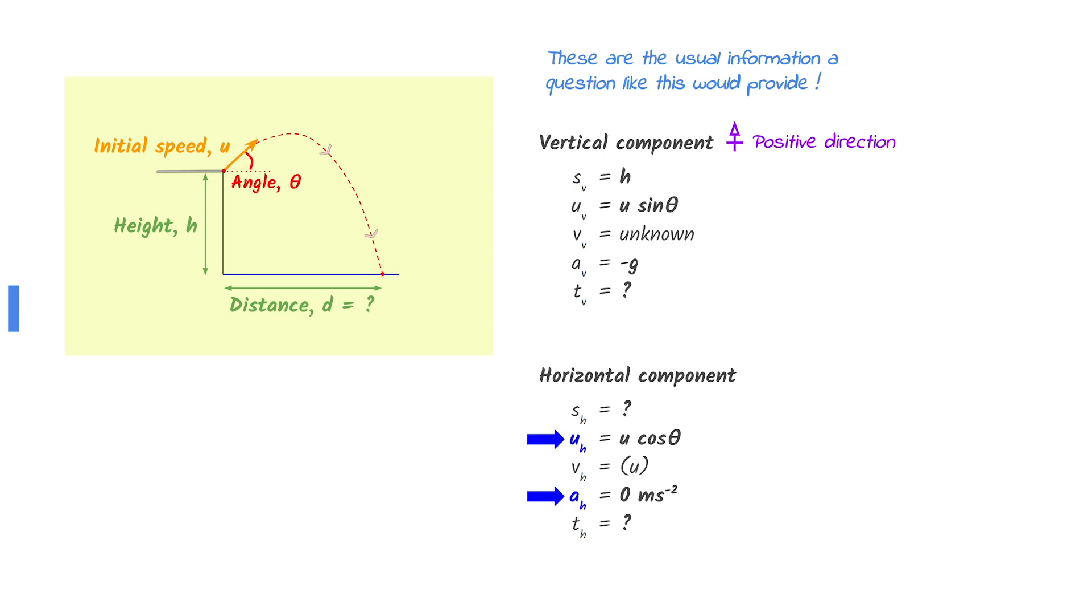For the horizontal component, horizontal velocity and the acceleration are known. Acceleration is zero since air resistance is negligible. We can use the speed equation to find the horizontal distance.